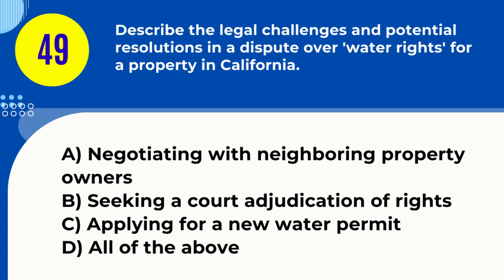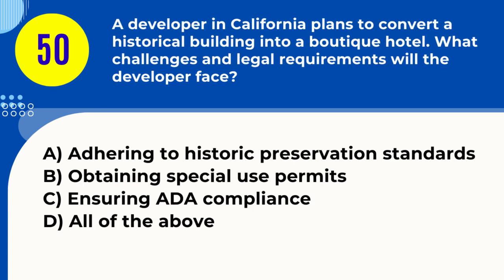Question 49. Describe the legal challenges and potential resolutions in a dispute over water rights for a property in California. A. Negotiating with neighboring property owners B. Seeking a court adjudication of rights C. Applying for a new water permit D. All of the above. Answer: D. All of the above. Explanation: Resolving water rights disputes may involve negotiations, court adjudications, and applying for new permits.